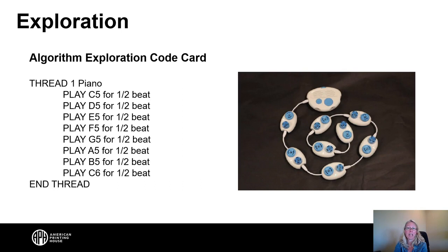Up on the screen right now, on the left hand side is an example of the code card. It says thread one piano, play C5 for half a beat, play D5 for half a beat, play E5 for half a beat, play F5 for half a beat, play G5 for half a beat, play A5 for half a beat, play B5 for half a beat, and play C6 for half a beat and thread. And on the right hand side, there is an image of the hub connected in thread one. There are eight play pods connected, all of them play pods.